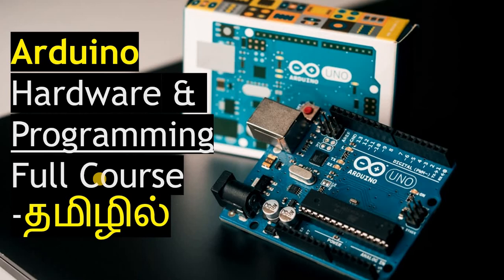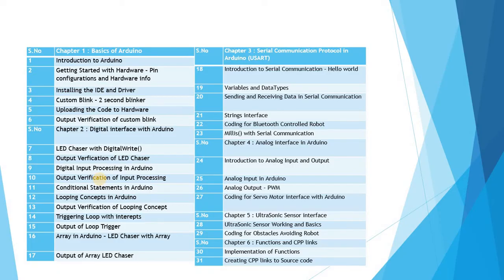Next is the Arduino hardware and software programming course. The first chapter covers what a program is and how it is uploaded. The second chapter covers C++ concepts available in Arduino. The third chapter covers Arduino's special serial functions. The fourth chapter is sensors, the fifth is robot code including Bluetooth-controlled robot code, and the sixth chapter covers functions and C++ files in Arduino.